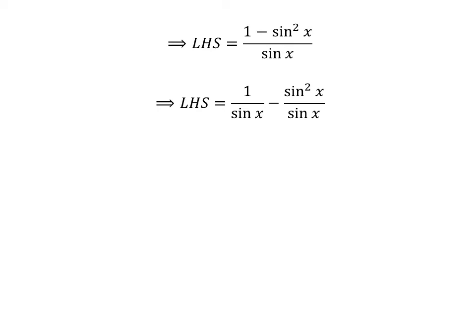So left hand side of the identity is equal to 1 upon sin of x minus square of sin of x upon sin of x. We know 1 upon sin of x is equal to cosecant of x, and cancelling out the common factor sin of x in the numerator and the denominator of the second fraction gives us left hand side of the identity is equal to cosecant of x minus sin of x, thus identity is verified.